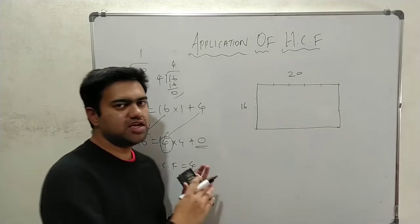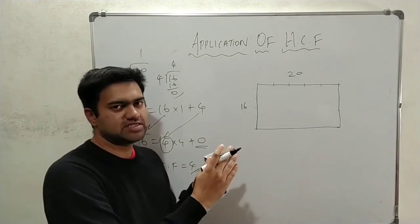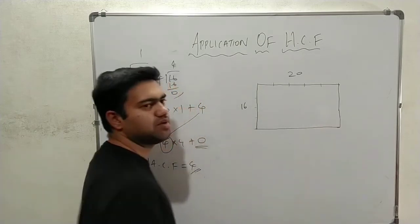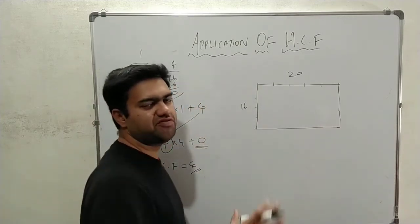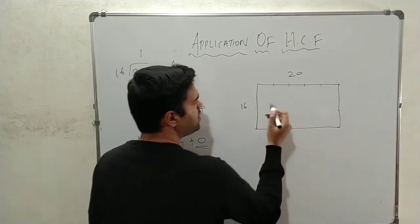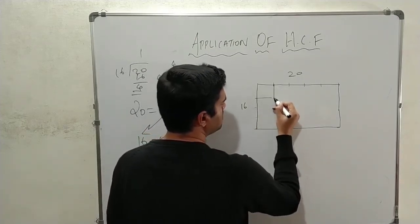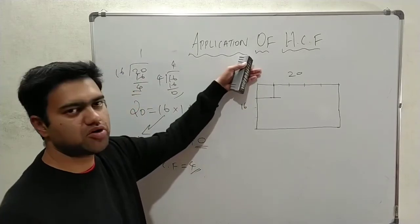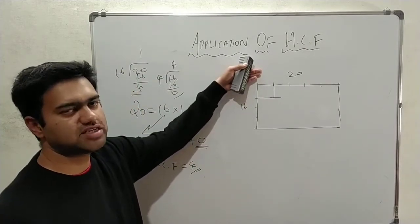So, what we are going to do is 4x4 tiles. 4x4 tiles are going to be exact match. Plus cost effective and minimum number of tiles. So, 4x4 tiles lay and we are going to be 20. So, we are going to split over here and we are going to split over here.